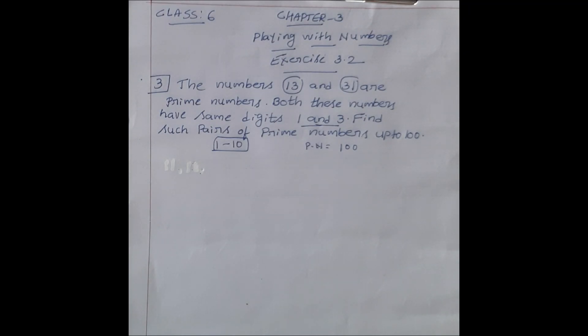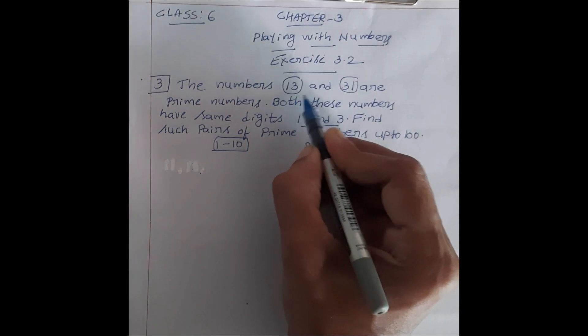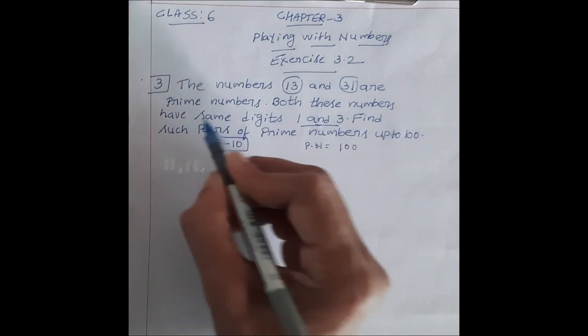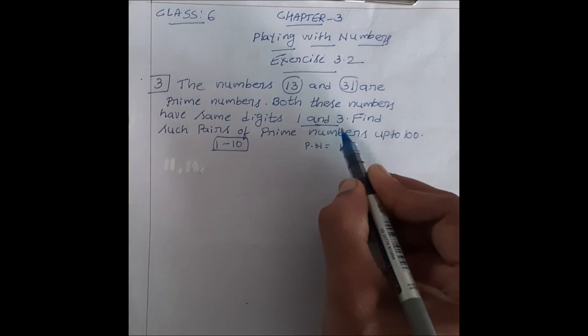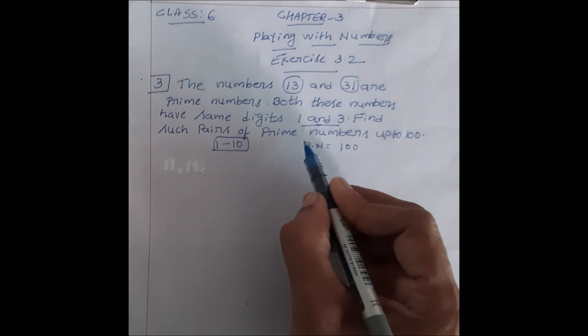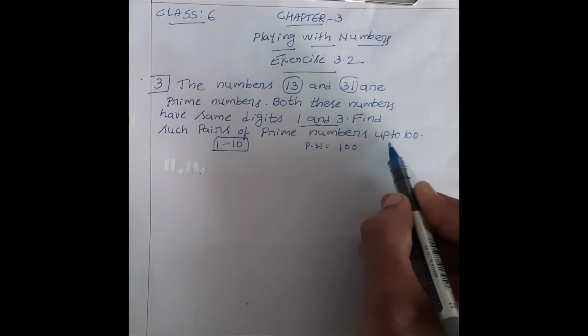Hello students, aaj hum class 6th, chapter 3, Playing with Numbers, exercise 3.2 mein question 3 discuss karenge. Question 3 says, the numbers 13 and 31 are prime numbers. Both these numbers have same digits, 1 and 3. Find such pairs of prime numbers up to 100.